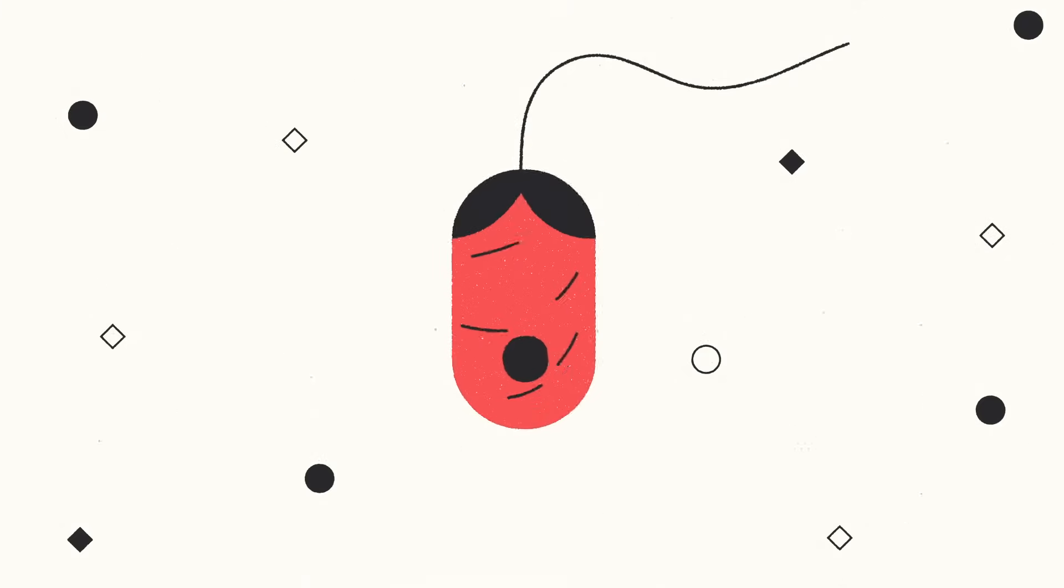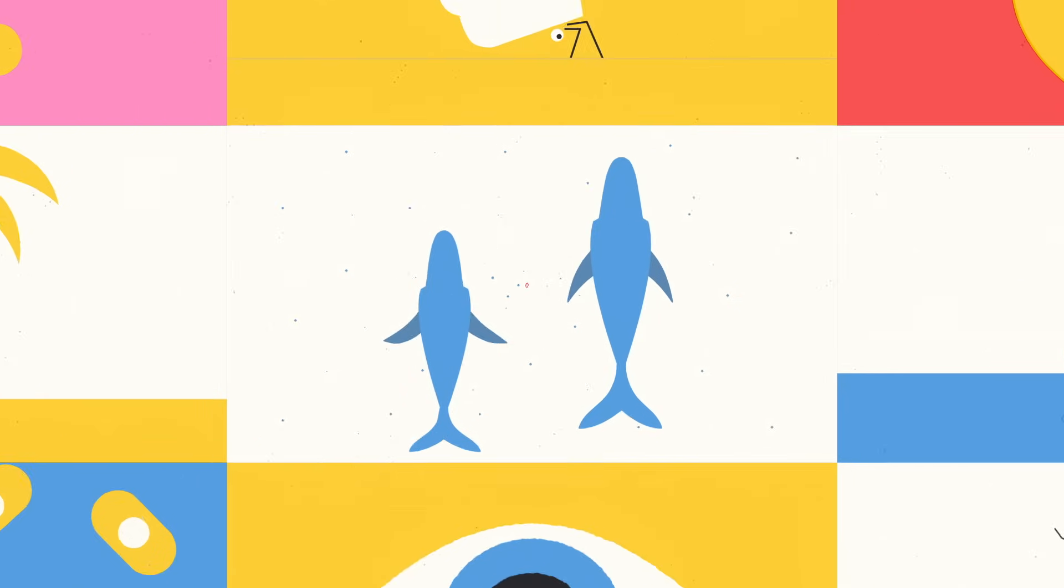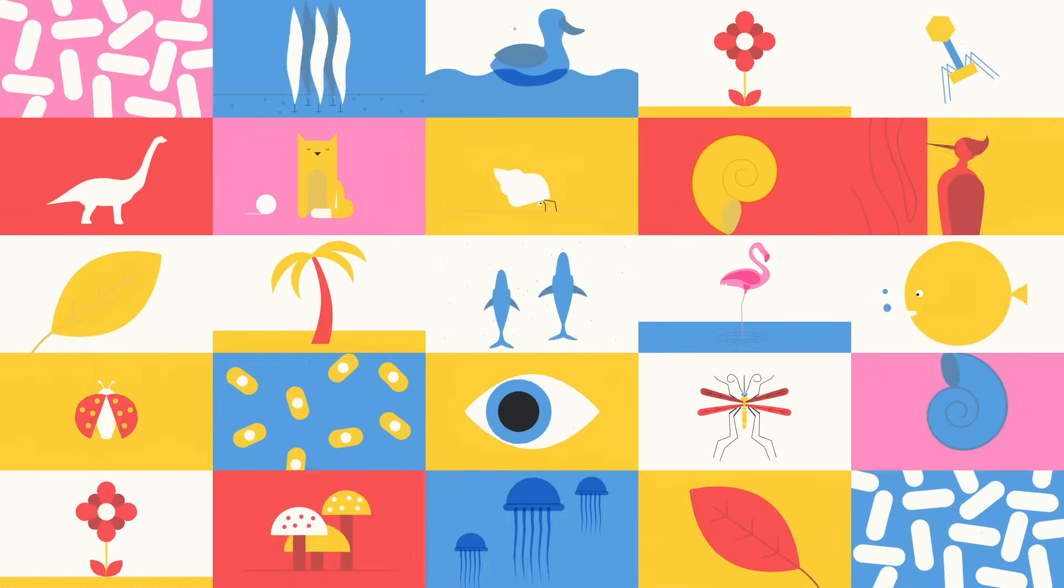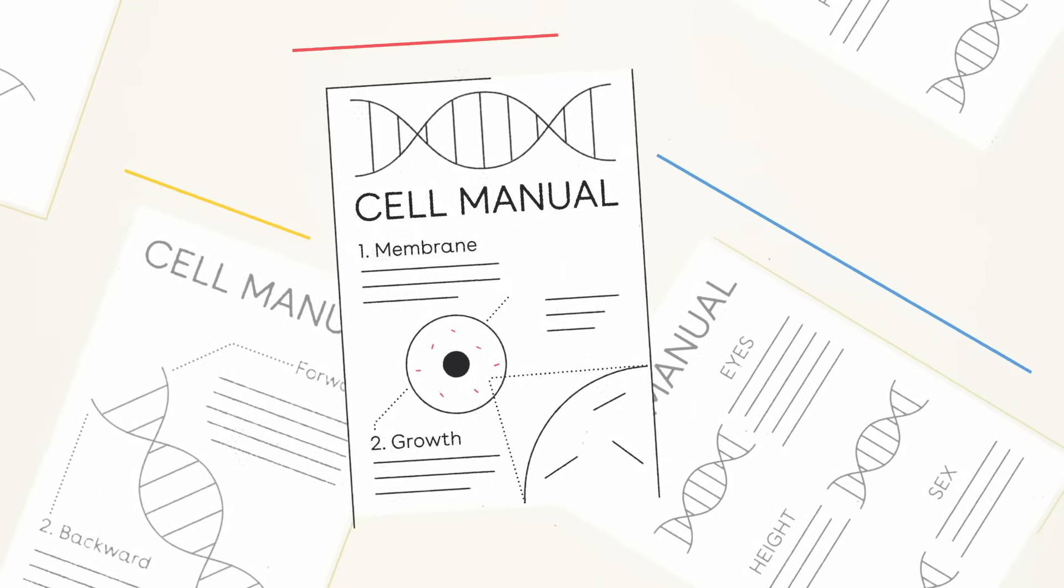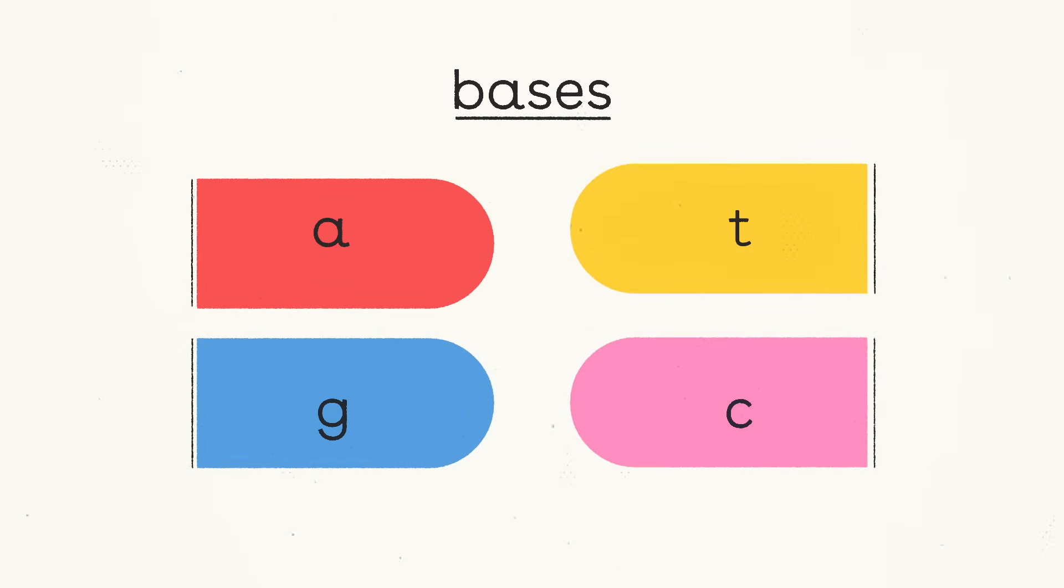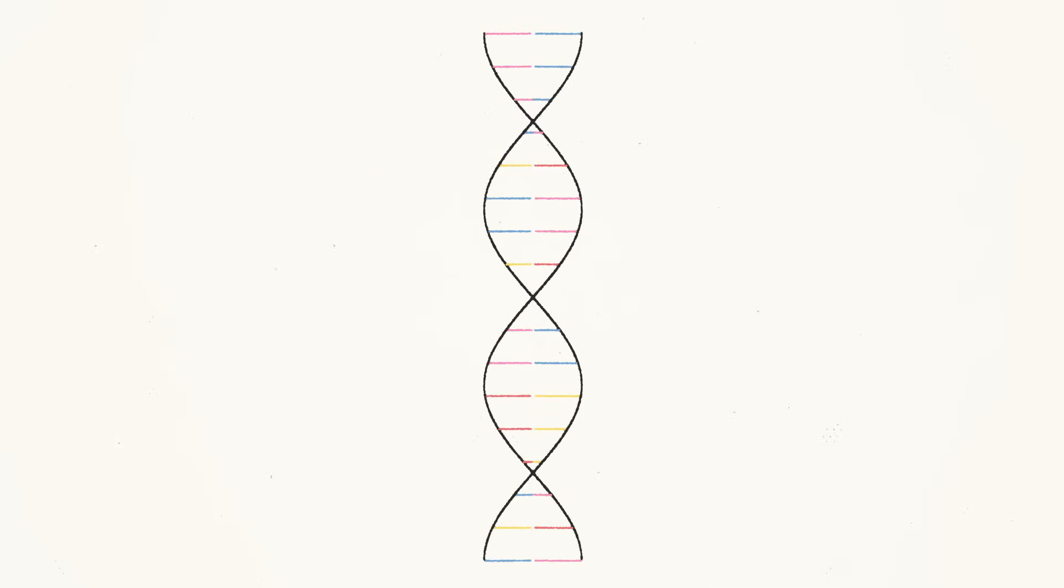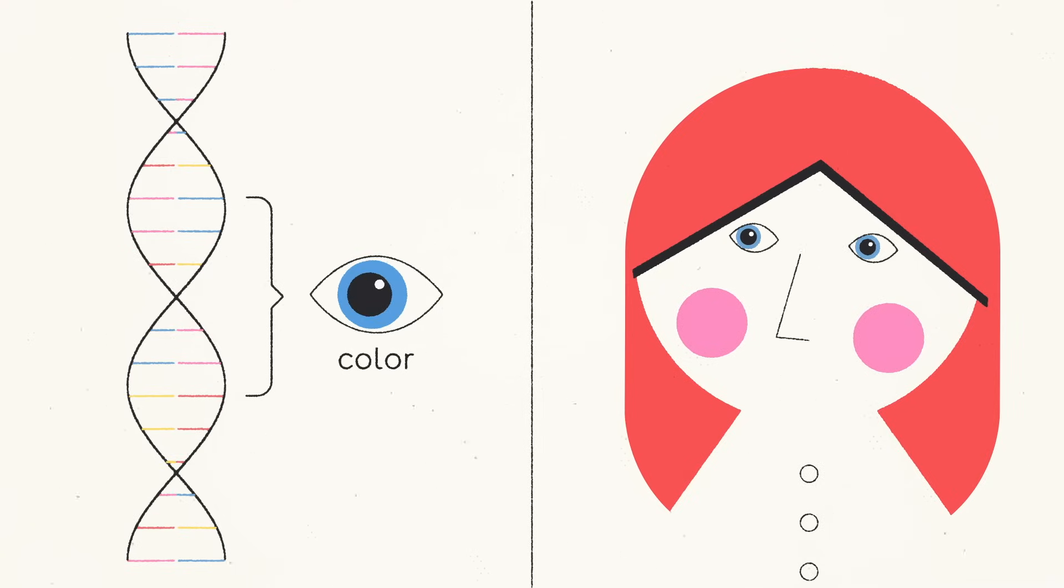From the smallest single-celled organism to the largest creatures on Earth, every living thing is defined by its genes. The DNA contained in our genes acts like an instruction manual for our cells. Four building blocks called bases are strung together in precise sequences, which tell the cell how to behave and form the basis for our every trait.